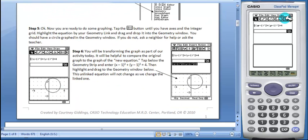Now students will tap this button to turn on the axes and integer grid. Tap three times for the axes, scaling, and integer grid.